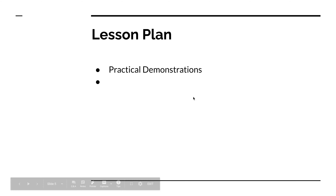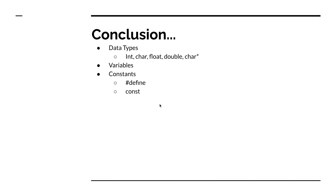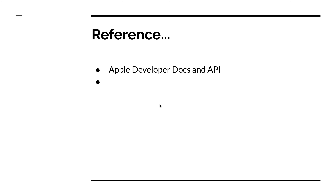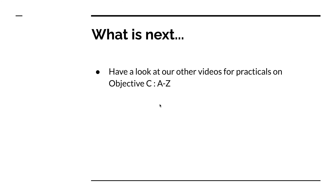We completed the practical demonstrations. The conclusion is: you learned about different data types, variables, and constants, and two ways of creating constants. In future lessons we'll be using Apple developer docs and APIs for reference. Have a look at our other videos for practicals on Objective-C. We're excited to see you in the next lesson.